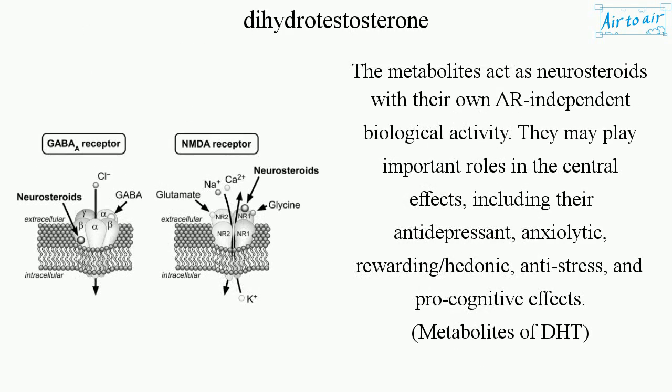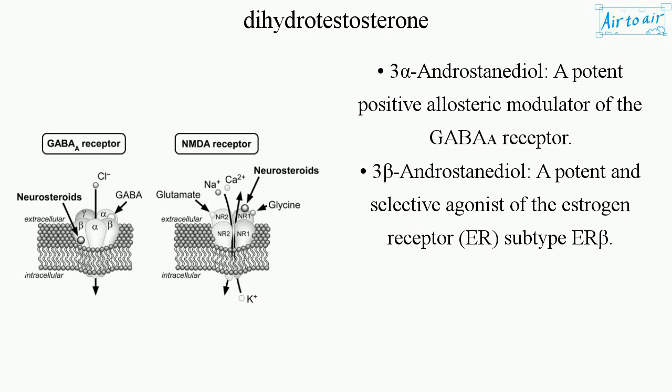The metabolites act as neurosteroids with their own AR-independent biological activity. They may play important roles in central effects, including antidepressant, anxiolytic, rewarding, hedonic, anti-stress, and pro-cognitive effects. A key metabolite of DHT is 3-alpha androstanediol, a potent positive allosteric modulator of the GABA receptor.